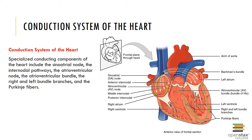The conducting system is a network of specialized cardiac muscle cells responsible for initiating and distributing the stimulus to contract. Through intrinsic cardiac conduction, cardiac muscle tissue contracts on its own even without neural or hormonal stimulation, because 1% of cardiac muscle tissue is auto-rhythmic. The sinoatrial node, or SA node, is embedded in the posterior wall of the right atrium near the entrance of the superior vena cava. Under normal conditions, the SA node generates an electrical impulse at 75 beats per minute.